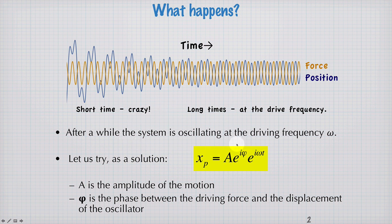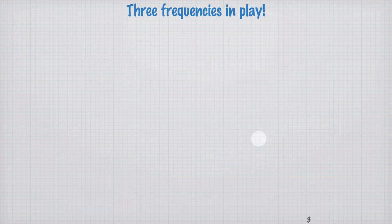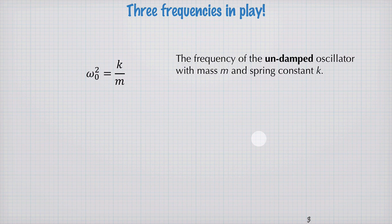What we're going to do to find the steady state response is try a solution of the form A e to the i phi e to the i omega t. That is, at the same frequency as the drive, with some phase shift relative to the drive, and some amplitude. I feel it's worth mentioning here, we have three frequencies in play.